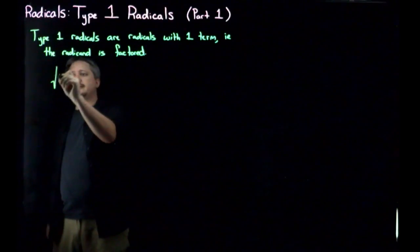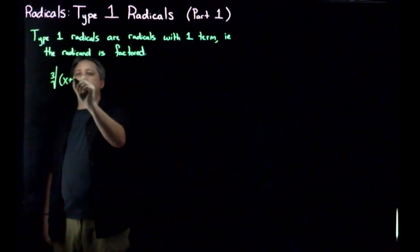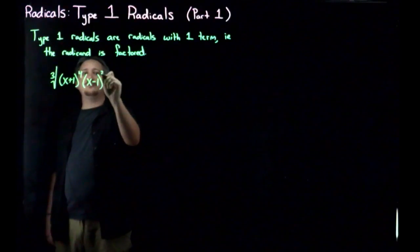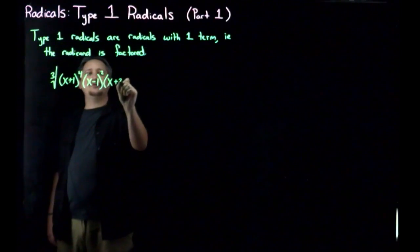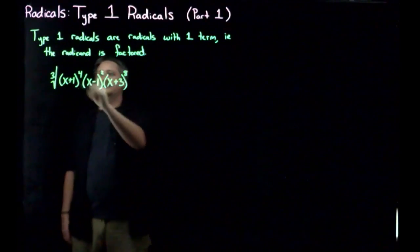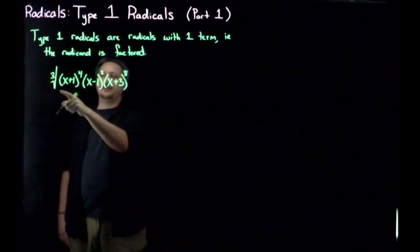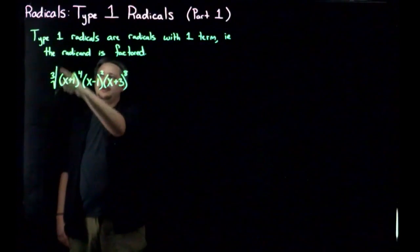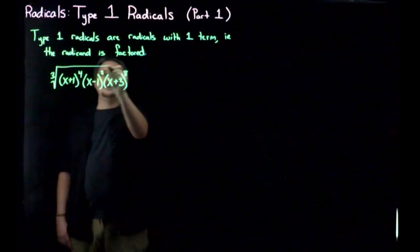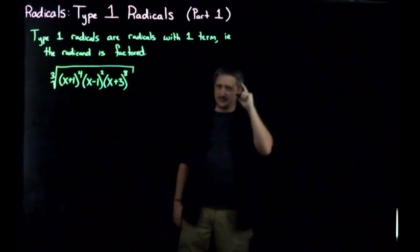Let's say we're going to take the third root of x plus 1 to the fourth, x minus 1 squared, x plus 3 to the eighth. Pro tip, by the way, if you're writing this out with handwriting, this is a great way of doing it. Put the symbol up, going up right, write out everything, and then continue the symbol. That way you have it exactly the right length and height.